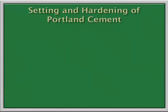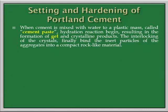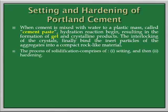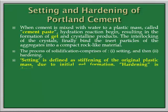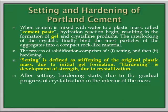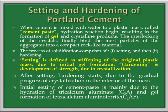Next we move to the setting and hardening of Portland cement. When cement is mixed with water, it gives a plastic mass called cement paste, resulting in the formation of gel and later crystalline products. The process of solidification consists of setting and then hardening. Setting is defined as stiffening of the original plastic mass due to initial gel formation, and hardening is development of strength due to crystallization. Initial setting of cement paste is mainly due to the hydration of tricalcium aluminate, and gel formation is due to tetracalcium aluminoferrite.